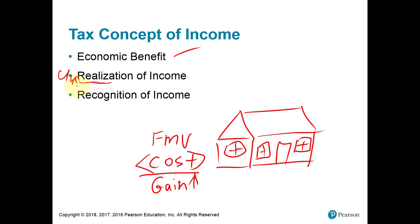Only when you sell the property does this gain become realized. Let's say this is an investment property you bought to make a profit and you had rented it out over the years. That realized gain on the sale has to be recognized — reported on your tax return — and you pay taxes on it. So: realized is triggered by the sale; unrealized is the appreciation or depreciation while you own it.